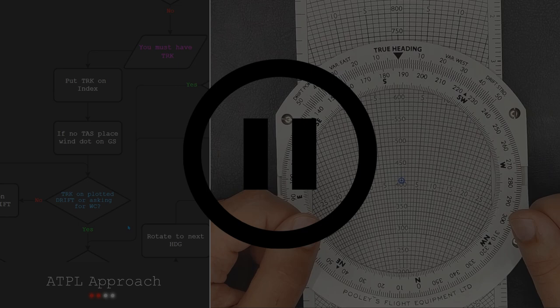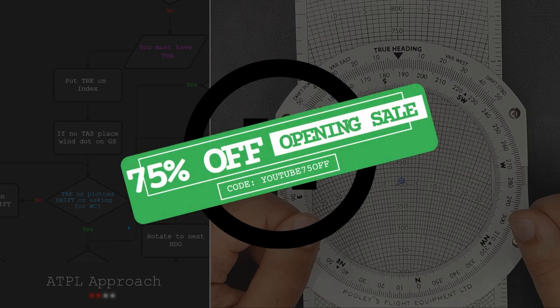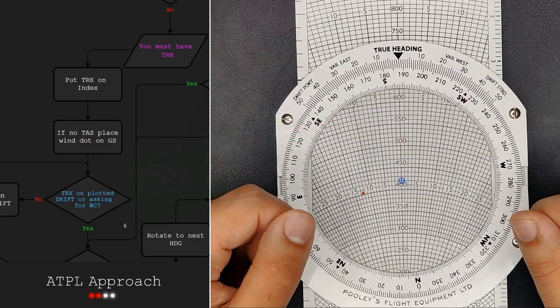Just before I show you the rest of the flowchart's path with this question, I'd like to remind you of the 75% off discount code YouTube75OFF, which is for the CRP5 course that has many of these types of videos. Don't miss out on the opening sale. Take a look at this video's description down below and follow the steps to get this great bargain. Okay, now back to the video.